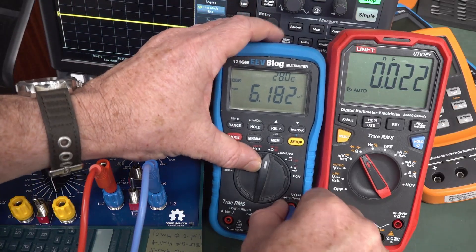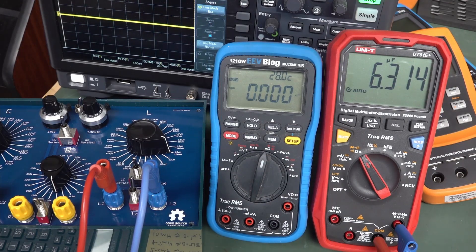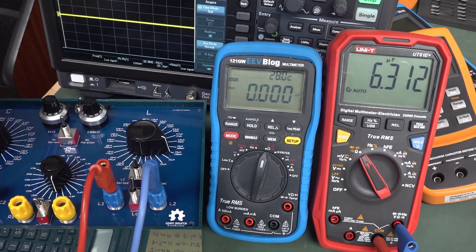So let's see what the Uni-T reads. 6.18 we're getting. Is it going to do the same range? 6.31. There you go. That's not too shabby at all.